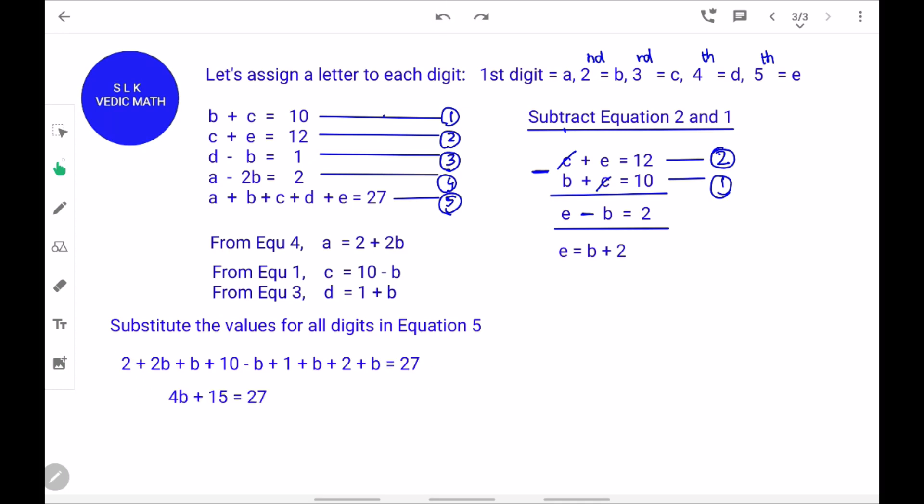First, we add the B's. 2B plus B is 3B, 3B minus B is 2B, 2B plus B is 3B, and 3B plus B is 4B. Next, we add the numbers. 2 plus 10 is 12, 12 plus 1 is 13, and 13 plus 2 is 15. So, 4B plus 15 equal to 27. B is 3.